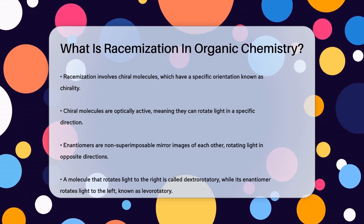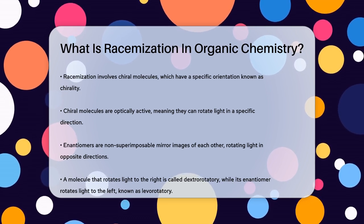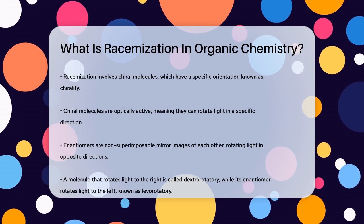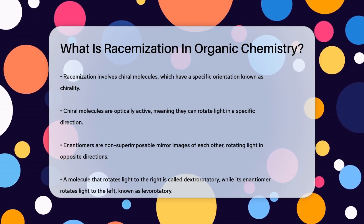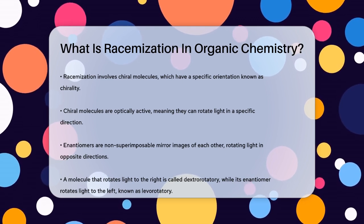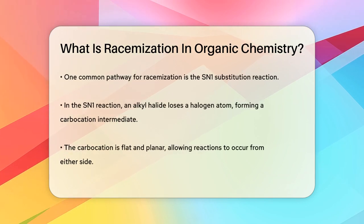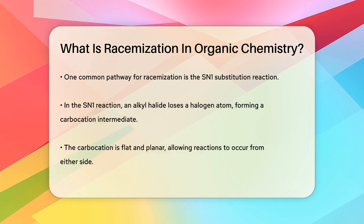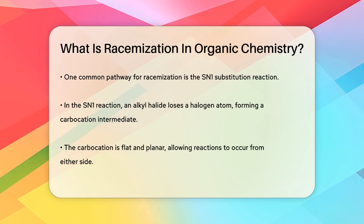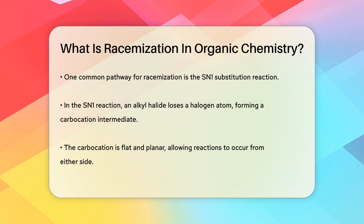Racemization is when a chiral molecule, which is optically active, meaning it can rotate light in a specific direction, is converted into a mixture that contains equal amounts of its two possible enantiomers. Enantiomers are like non-superimposable mirror images of each other. For example, if you have a molecule that rotates light to the right, dextrorotatory, its enantiomer would rotate light to the left, levorotatory.